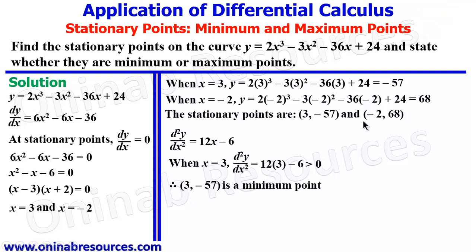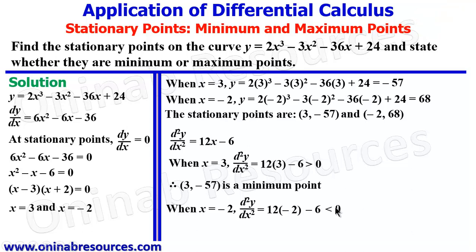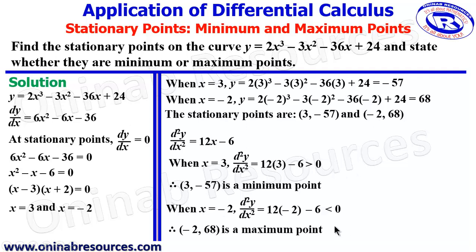When x is negative 2, d²y/dx² will be 12 times negative 2 minus 6, which gives negative 30, which is less than 0. Since it is less than 0, this point is a maximum point. Therefore, (negative 2, 68) is a maximum point.